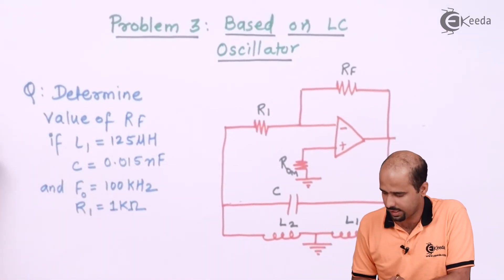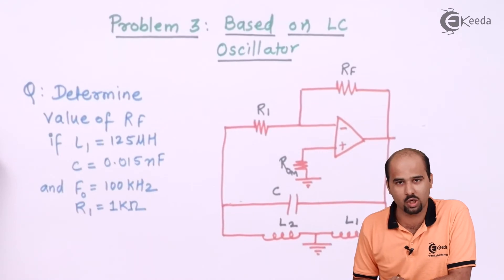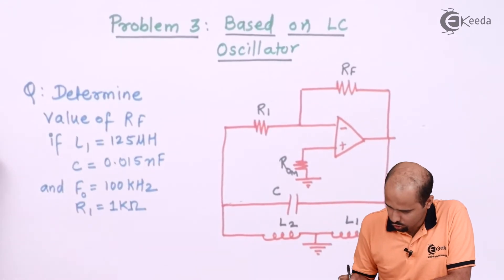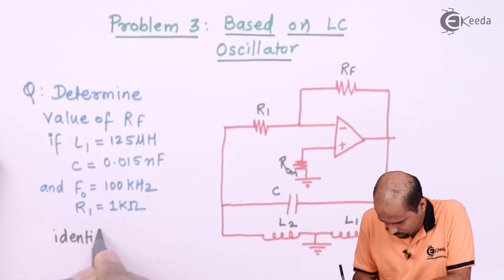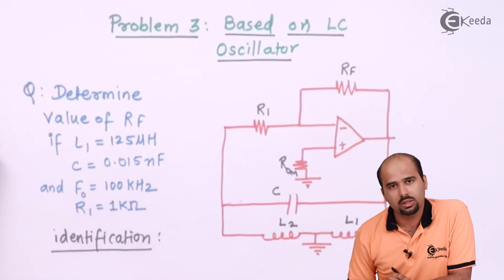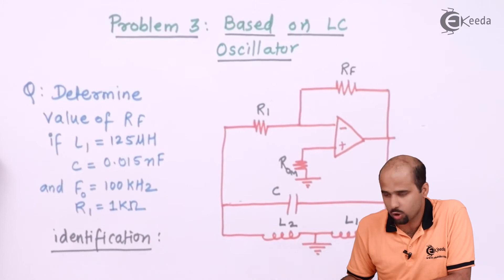First of all, we will say that which kind of LC oscillator is this, right? So identification, we have to identify that which kind of LC oscillator is L1 and L2, two inductors,